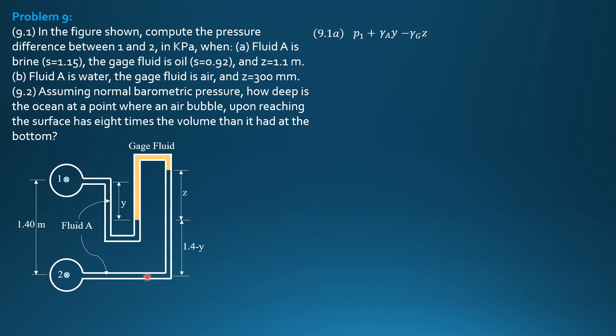Then, we go down by Z plus 1.4 minus Y. And, we reach this point which is at the same level as 2. So, we have the same pressure. So, plus gamma of fluid A because this is fluid A times quantities Z plus 1.4 minus Y. Then, equals the pressure here which is equal to the pressure at 0.2. Now, notice that gamma AY can be cancelled.